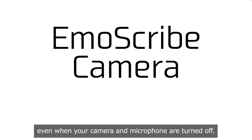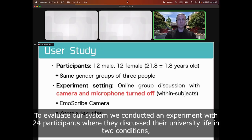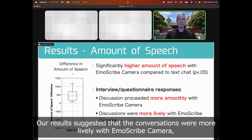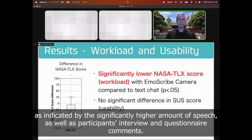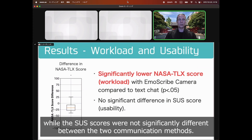To evaluate our system, we conducted an experiment with 24 participants where they discussed their university life in two conditions: with EmoScribe Camera, and with Zoom's text chat with camera and microphone turned on. Our results suggested that conversations were more lively with EmoScribe Camera, as indicated by the significantly higher amount of speech, as well as participants' interview and questionnaire comments. Participants also experienced a lower subjective workload with our proposed system, while the SUS scores were not significantly different between the two communication methods.